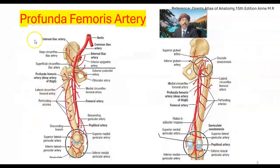If you look at the image here, this is the femoral artery and this is the profunda femoris artery. The profunda femoris artery has branches like the lateral circumflex artery and medial circumflex artery. The medial circumflex artery is here, and there are four perforating arteries.